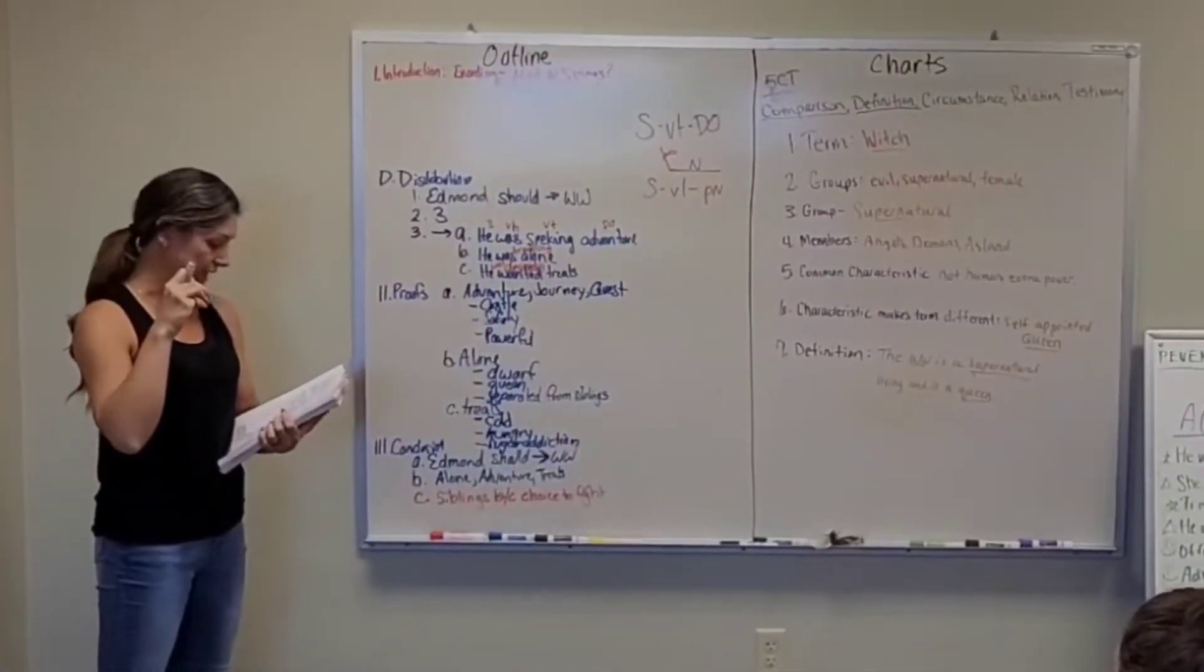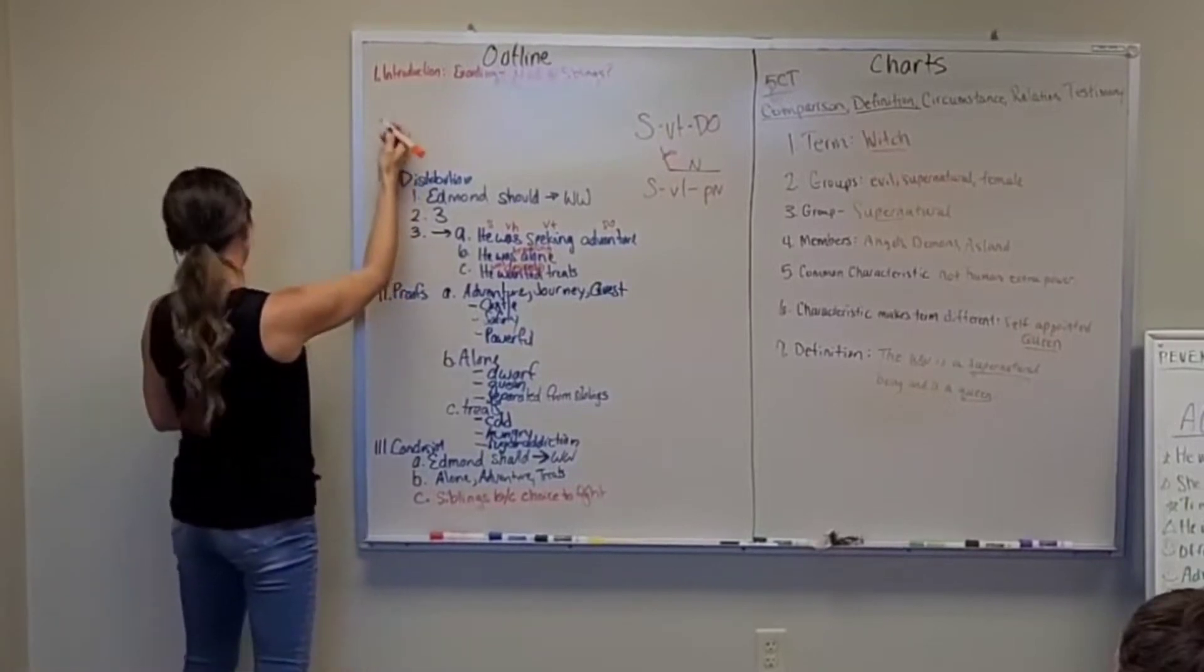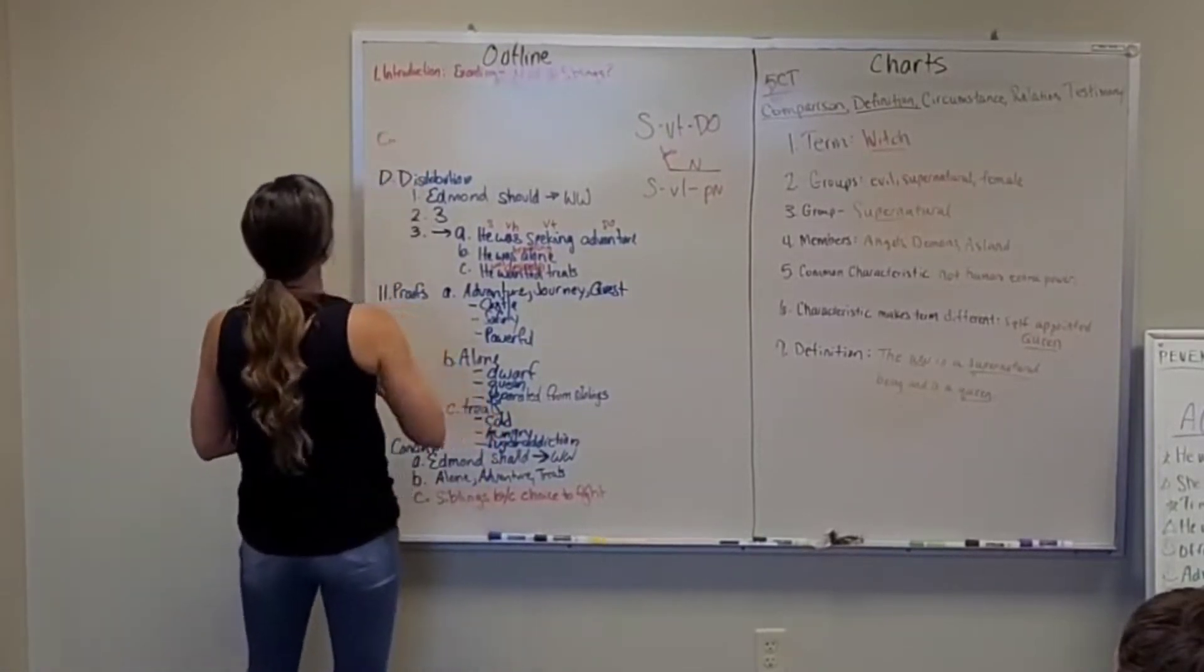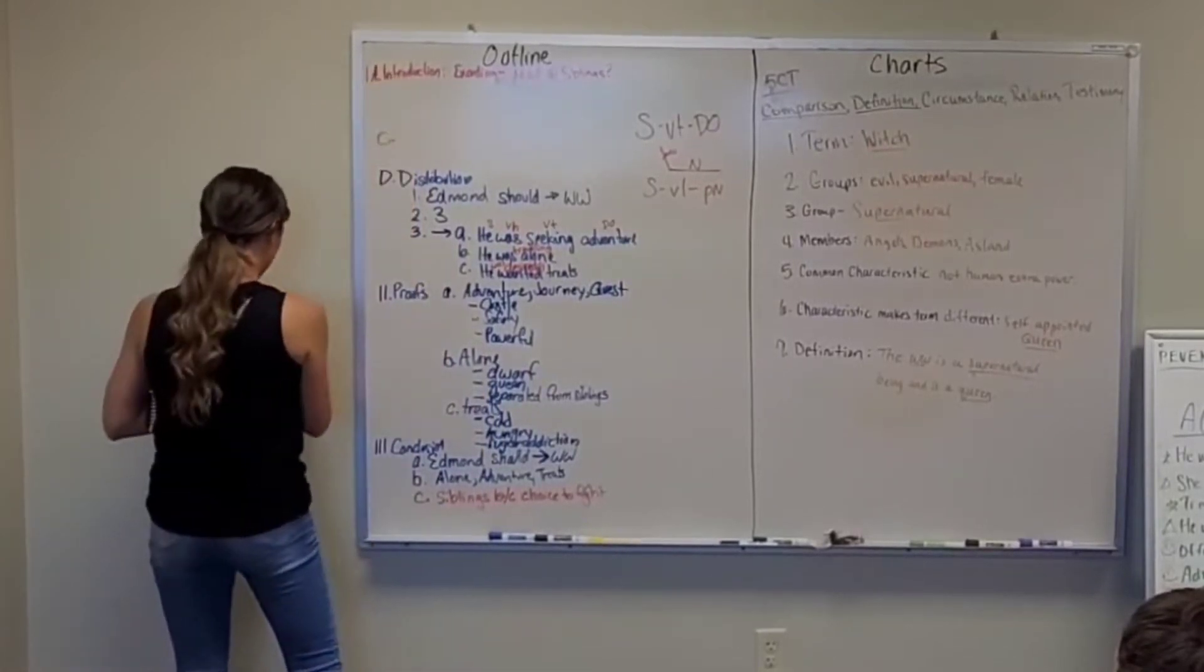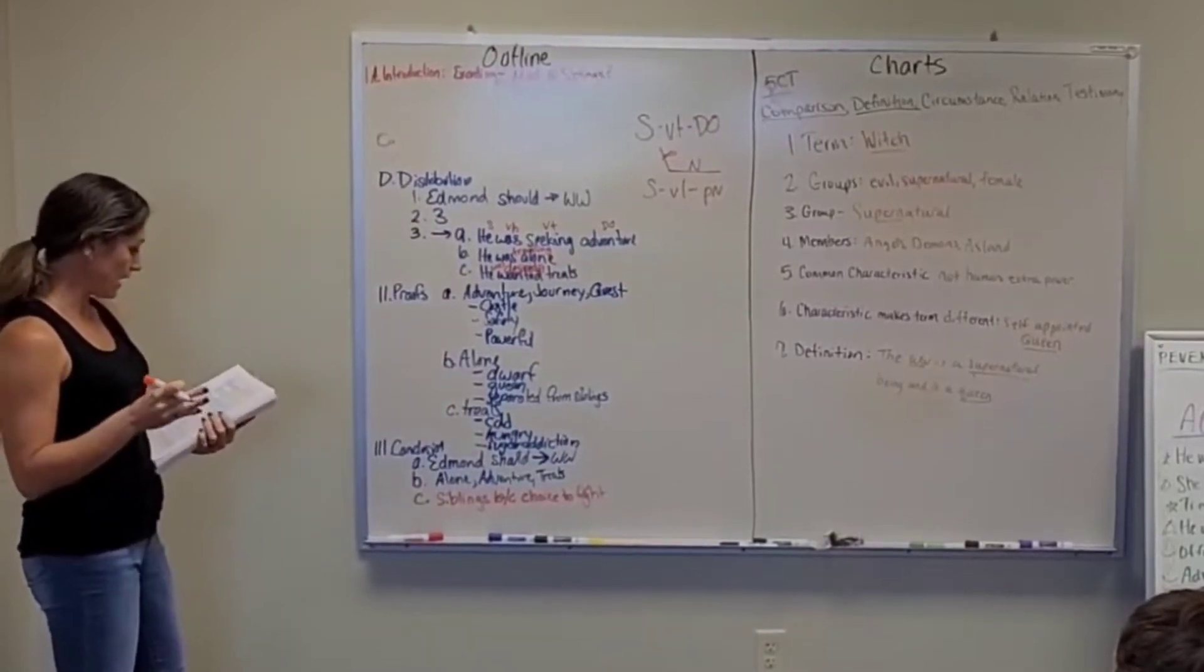We're going to add in our division now, which is going to go up here. This is the third part of the introduction. You see this is still essay five? Yeah, this is week two on essay five. We're going to do our outline now. So we're adding to our outline the division.